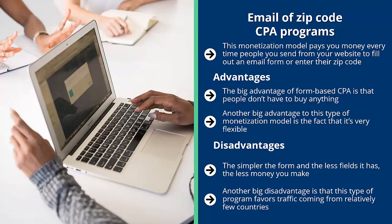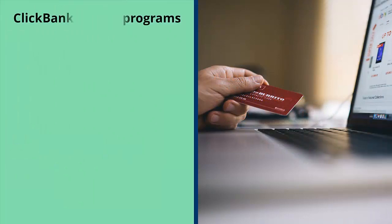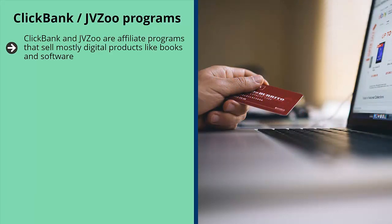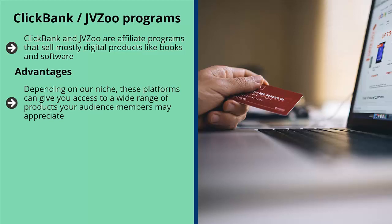If your traffic comes from developing economies, these programs are usually not available — ads won't show up, and if forced to show, clicks lead to a blank or warning page. ClickBank and JV Zoo are affiliate programs that sell mostly digital products like books and software. They offer a wide range of products on an affiliate basis and people usually have to buy something for you to get paid. These platforms work best when combined with a mailing list.